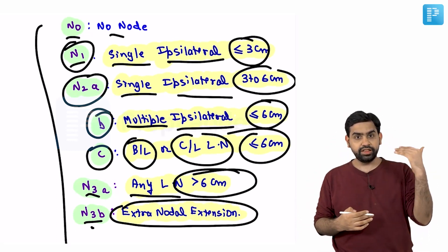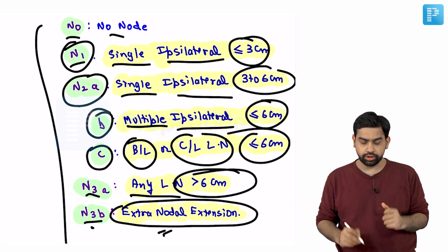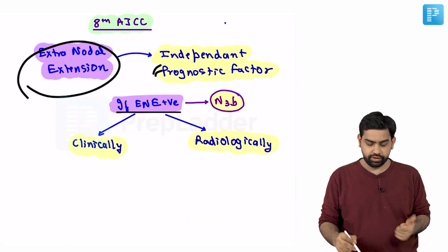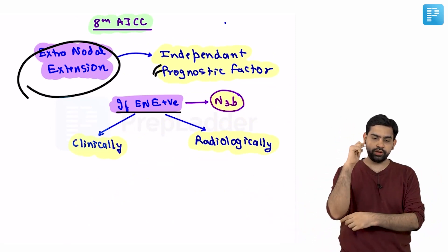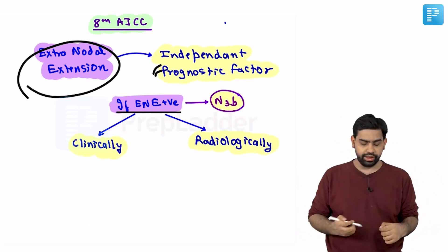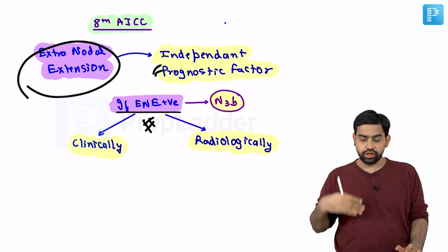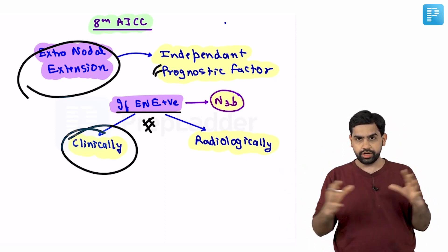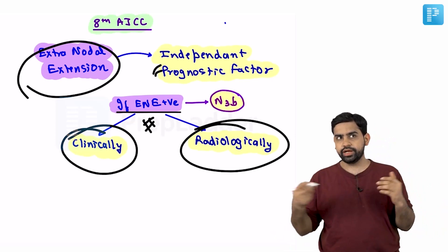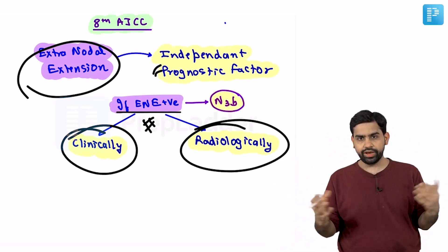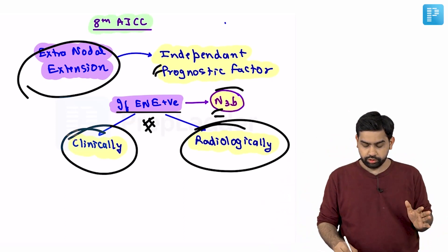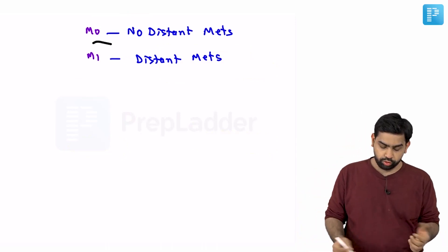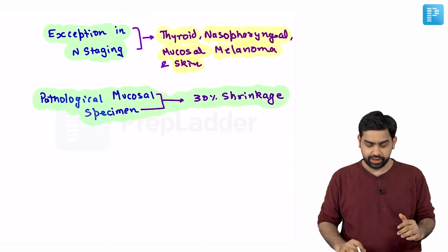Extra nodal extension, if clinically palpable as a matted and fixed node or radiographically confirmed on MRI — showing cortical loss and mixing with surrounding tissue — qualifies as N3B. M0 means no metastasis; M1 means metastasis is present.